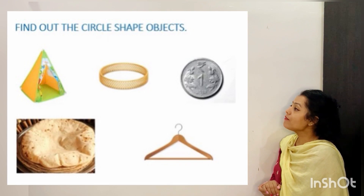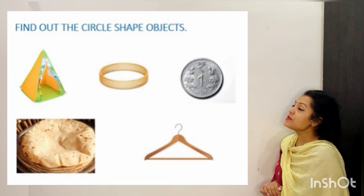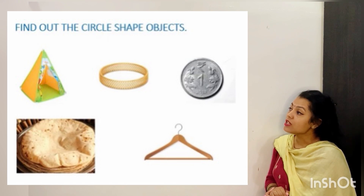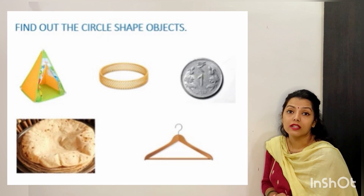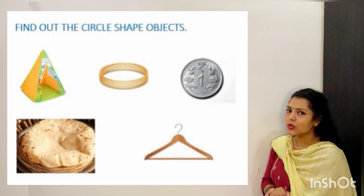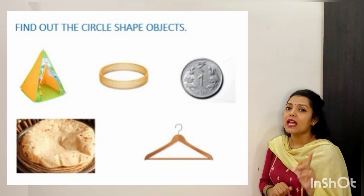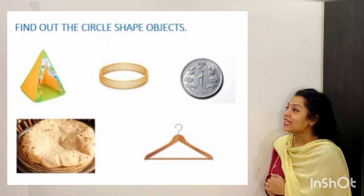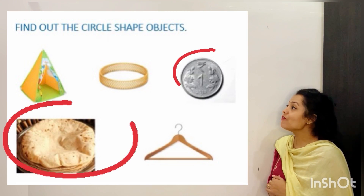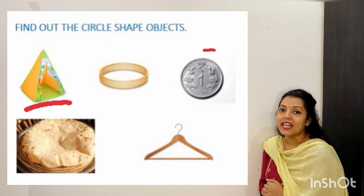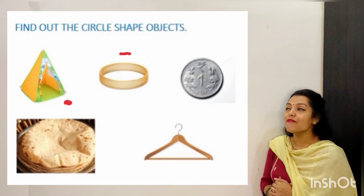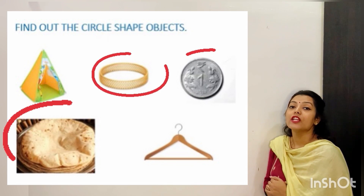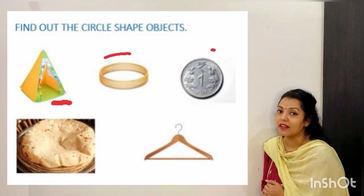Now here we have some shapes. Can you guess out of these which is circle in shape? Yes! You can guess. The first one is chapati, then we have coin, and lastly we have bangle. So we have 3 circle shapes here.